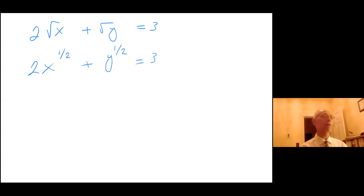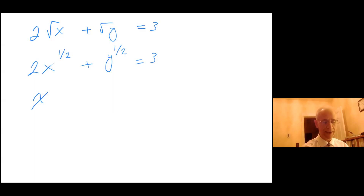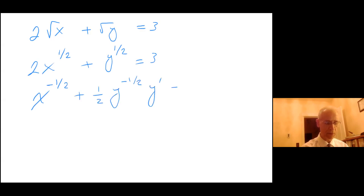Now I'm ready to take the implicit differentiation of both sides. One half times two is just one, so I have x to the negative one half plus one half y to the negative one half y prime equals zero.